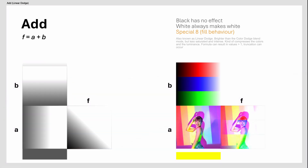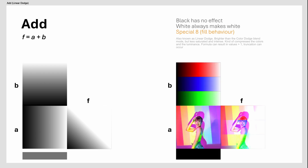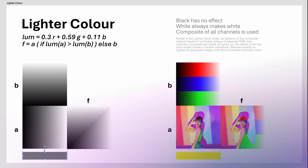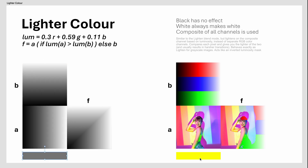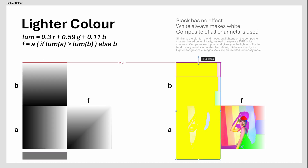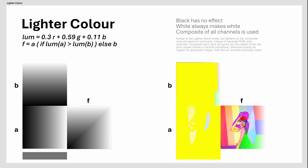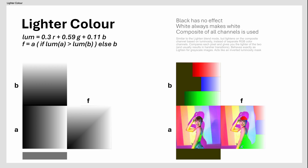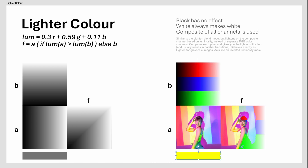The Add Blend Mode, also known as Linear Dodge, is brighter than the Color Dodge Blend Mode but less saturated and intense. It kind of compresses the colors and the luminance. The Lighter Color Blend Mode is very similar to Lighten, but rather than looking at each RGB channel individually, it uses the perceived luminosity from the composite of all the RGB channels to determine which pixel is lighter. Acts as an inverted luminosity mask.